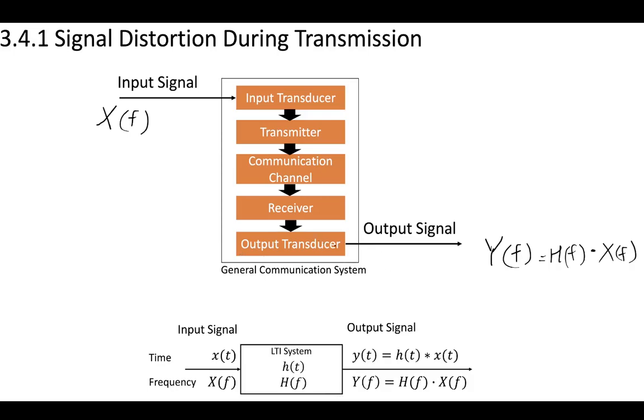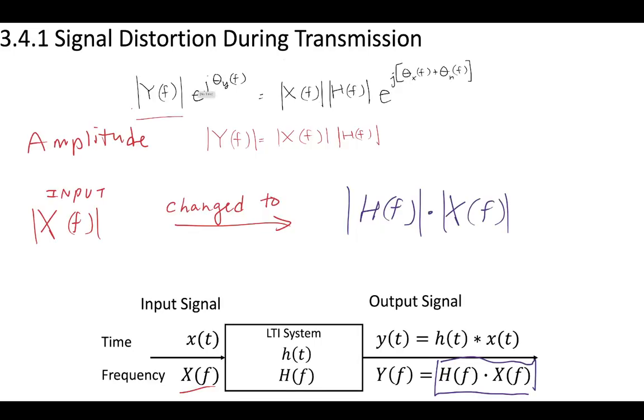We'll have this input signal and output signal, and we can characterize them in the frequency domain like we discussed in the previous video. We can treat the entire communication system just like an LTI system. We have an input with an input magnitude that is changed at the output to an output magnitude that's characterized by the transfer function magnitude multiplied by the input signal magnitude.